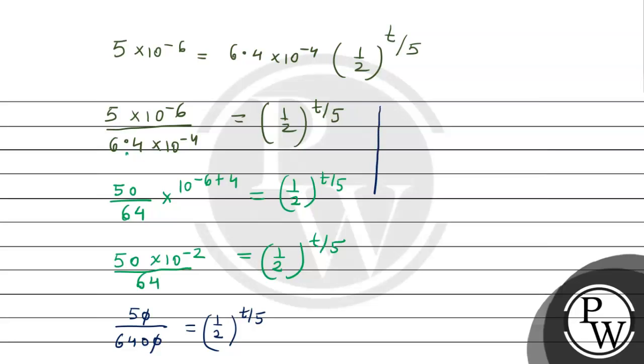Finally solving this portion: 1 upon 128 equals 1 by 2 raised to power t upon 5. This portion is 1 upon 2 to the power 7, and here is 1 upon 2 to the power t by 5. Now base is equal, so power is equal. It means 7 equals t upon 5.